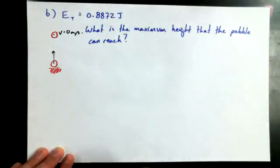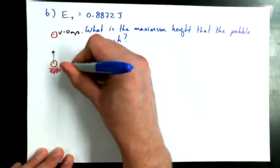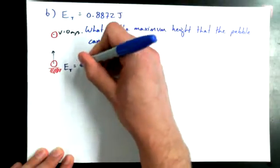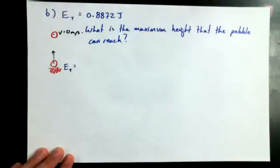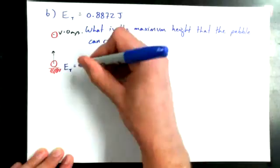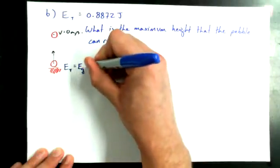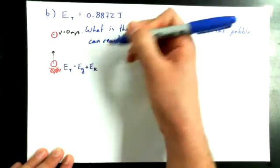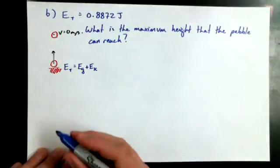So I want to write this out. I want to write down this special case at the bottom. E total at the bottom, total mechanical energy. And I'm just going to write E capital T. Total energy is equal to EG plus EK at the bottom. And sometimes people will say, oh, well.